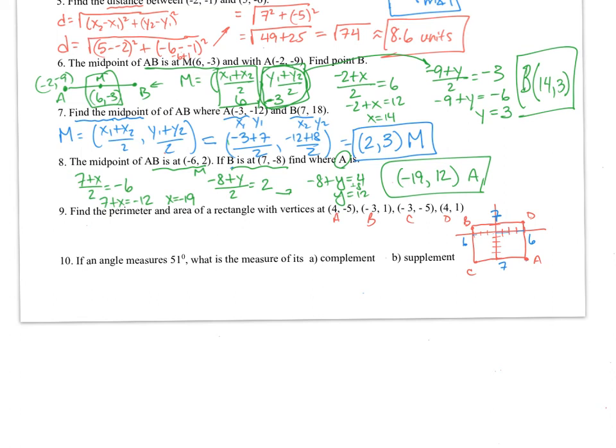I can say the perimeter is 2 times 7 plus 2 times 6, or you could have just said 7 plus 7 plus 6 plus 6. This is 14 plus 12, which gives me 26 units. The area, I would just multiply the sides, so 7 times 6, and that gives me 42 square units.